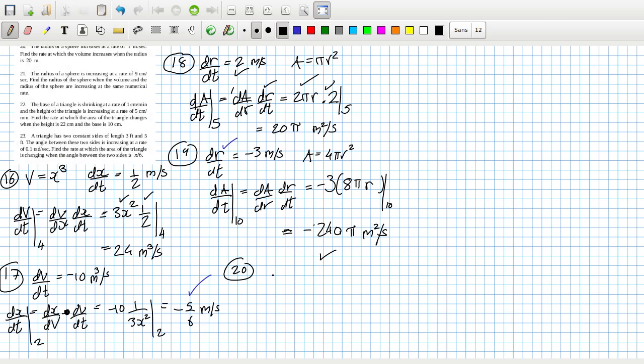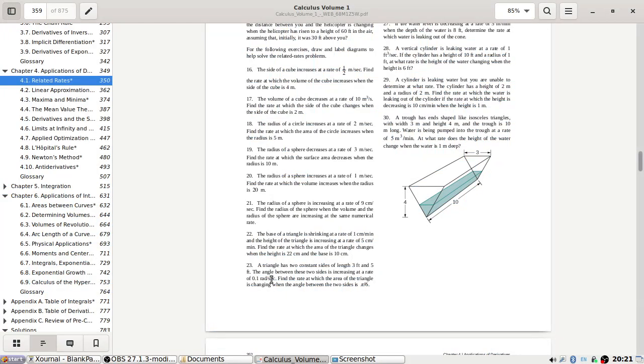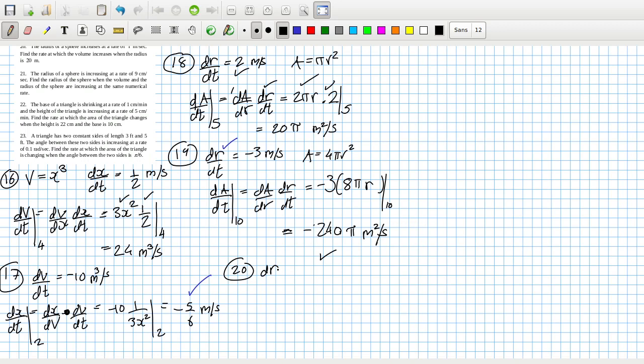The radius of the sphere increase at the rate of 1, so dr dt equals 1 meter per second. Find the rate at which the volume increases, so that's dv dt. That would be dv dr times dr dt, but dr dt is 1, so it doesn't really matter. So the volume of the sphere is 4 over 3 pi r cubed, so that would be 4 pi r squared, but at 20.